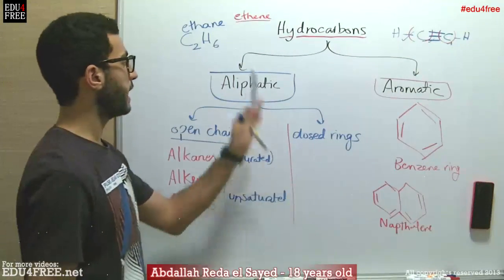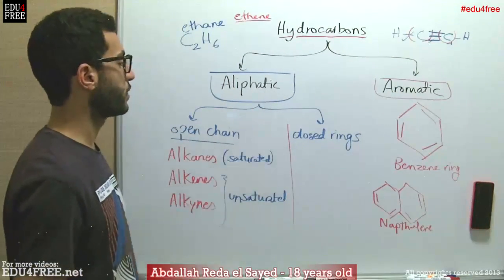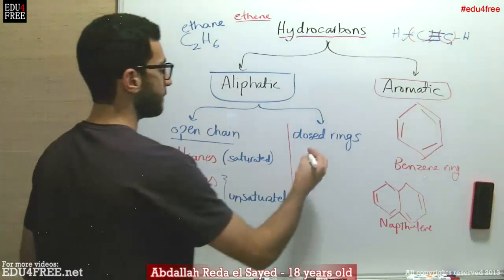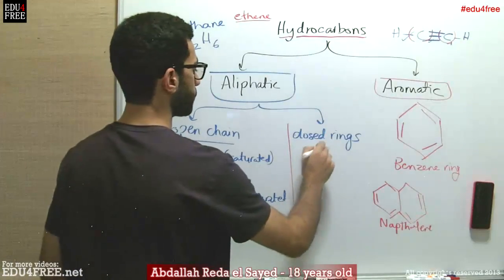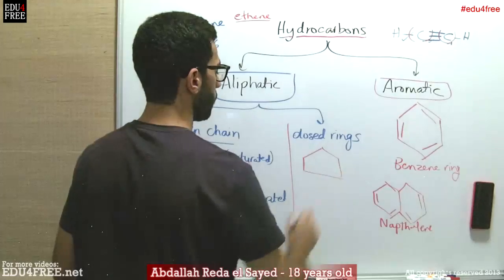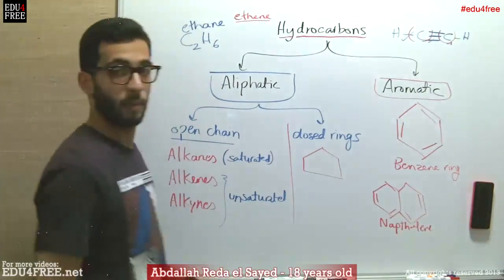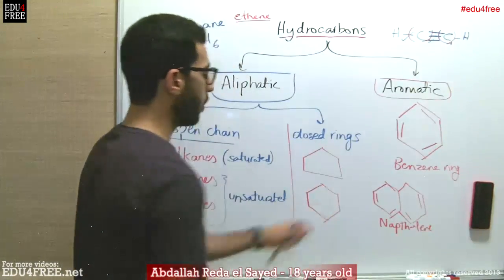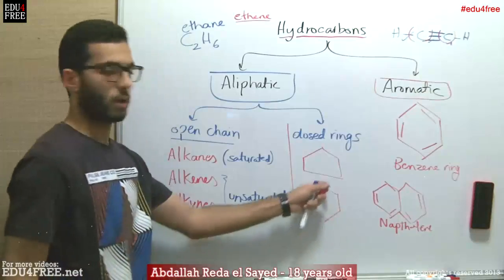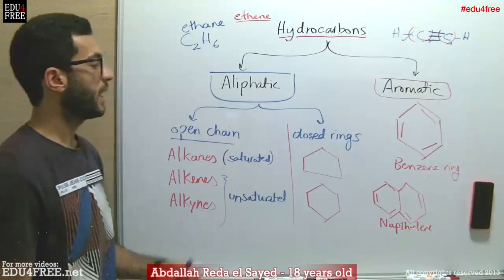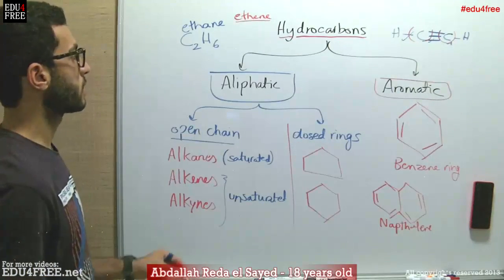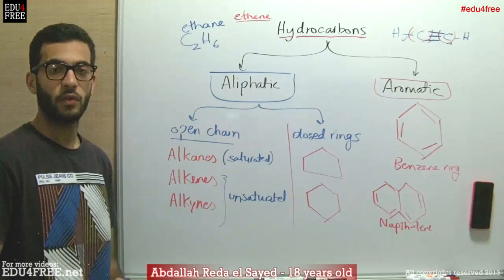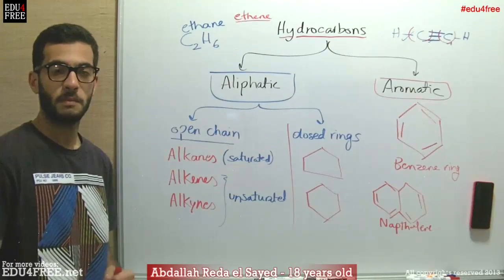As for the closed aliphatic hydrocarbons, we can have, for example, cyclopentane or cyclohexane, where no double bonds are involved. So basically, this is the classification of hydrocarbons. Thank you for watching and see you next time.